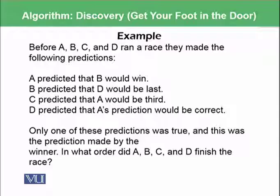C predicted that A would be third and D predicted that A's prediction would be correct. As soon as they finished their race, the following were the findings.